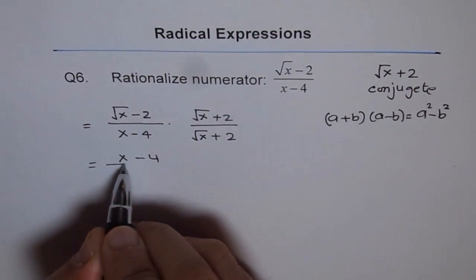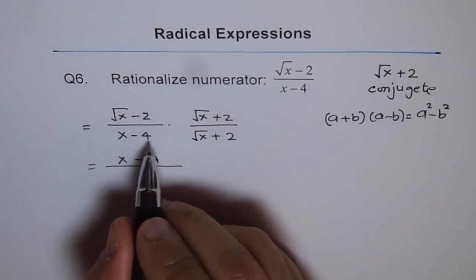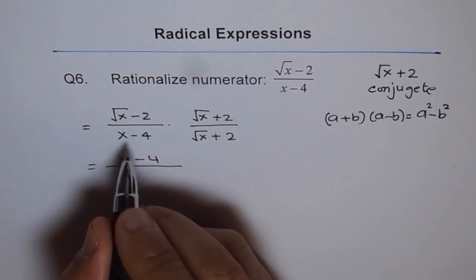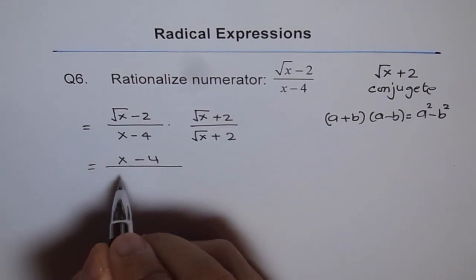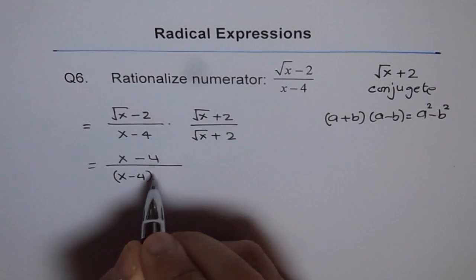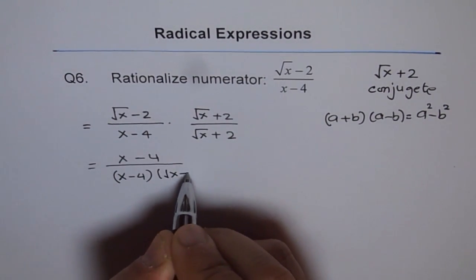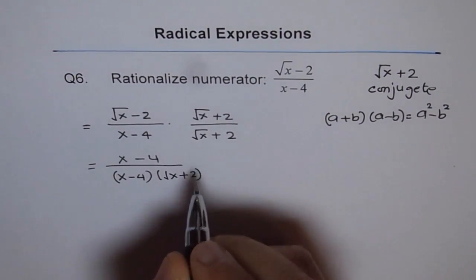And I will suggest, don't expand denominator. Write denominator in factored form, which is x minus 4 times square root x plus 2.